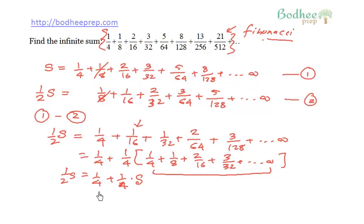So furthermore, I'm just shifting this particular thing into the LHS part. It will be 1/2 S minus 1/4 times S is equal to 1/4. Or on further simplification, I'll get the value of S is 1. So the sum of this value is 1.